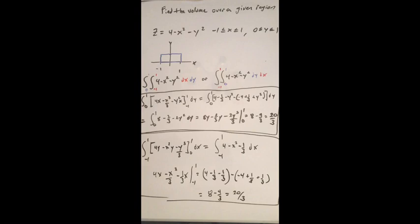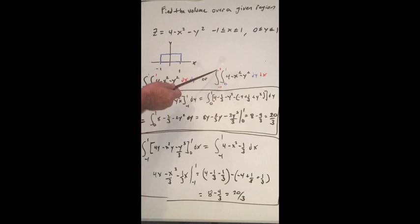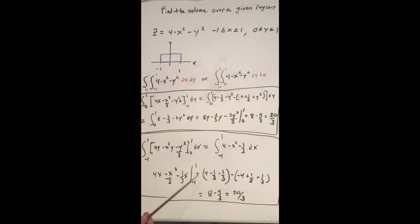Find the volume under a surface over a given region. x goes from y minus 1 to 1, and y goes from 0 to 1. To find the volume, we can set up a double integral in two ways: with dx on the inside, or with dx on the outside from -1 to 1 and y from 0 to 1. Both come out to 2/3, and both methods are about the same degree of difficulty.